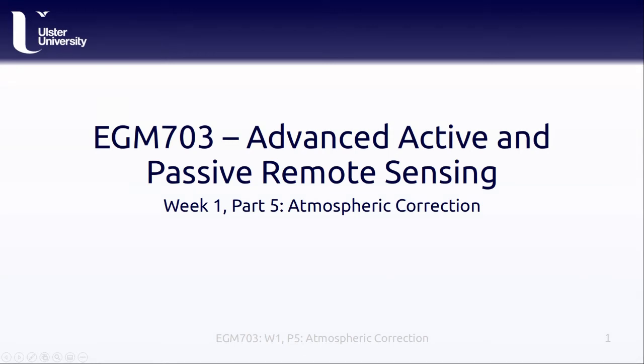Hello and welcome to Week 1, Part 5 of EGM 703, Atmospheric Correction. In this lesson, we'll learn about a few different ways that we can correct for atmospheric effects in satellite images, focusing slightly more on the thermal-infrared portion of the electromagnetic spectrum.